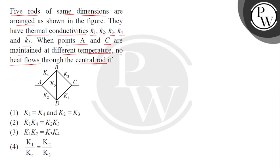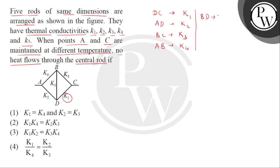Given है हमें five rods. Serial number wise देख लेते हैं — सबसे पहली rod है DC, इसका coefficient of thermal conductivity है K1. Then the second rod is AD, इसके लिए है K2. Third rod BC, इसके लिए है K3. Fourth rod is AB, for this K4. And the central rod बताई हुई है question में, that is BD, इसका coefficient of thermal conductivity है K5. बताया है कि जब point A and C को different temperatures पर maintain किया जाता है, तो इस BD rod में से कोई भी heat flow नहीं होता. Because this is the central rod.